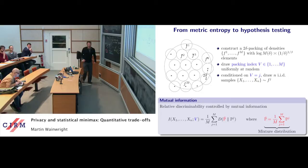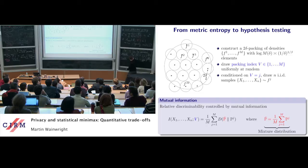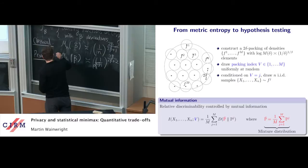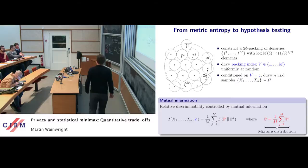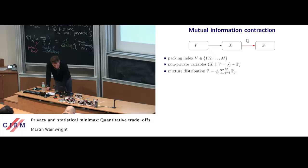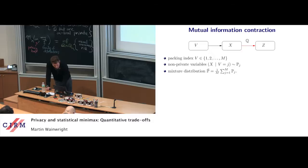There was a question: why do you pay a factor 2 in the power of the rate? So the classical rate has exponent 2beta/(2beta+1), but we're proving that when you privatize at level alpha, you suffer a penalty and the exponent becomes 2beta/(2beta+2).